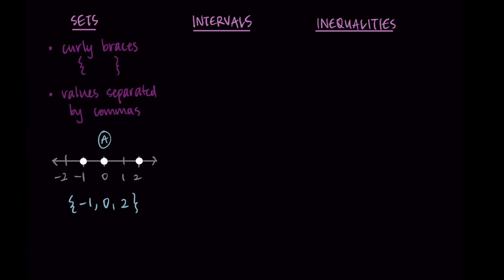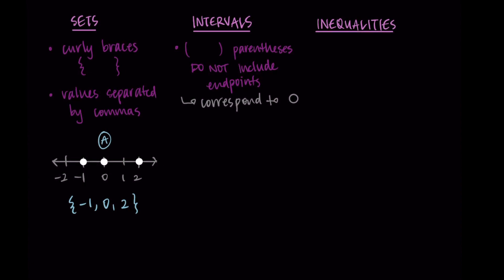This gets a lot more interesting once we do intervals and inequalities, which is really where I want to focus. For intervals, we use parentheses — sometimes I call these soft brackets. We use these when we do not want to include the endpoints, which would be in cases where we have an open circle on the number line. This concept can be kind of confusing at first, so try to be kind to yourself as you're learning this. Just remember: parentheses are for when we don't include the endpoints.